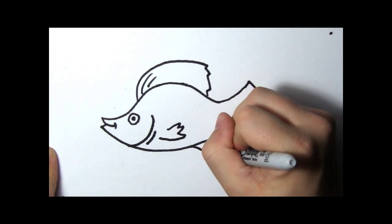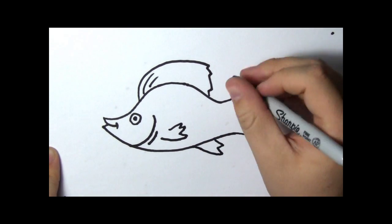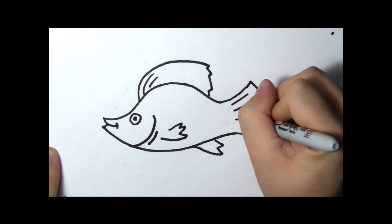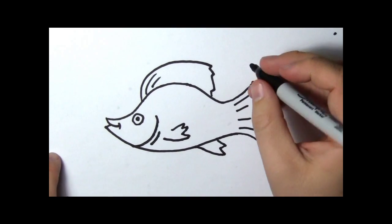They also have more fins on the bottom. Fins help fish move through the water. They're kind of like our arms and feet.